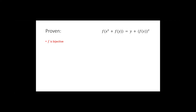So f is bijective. Now, on the left-hand side we have an x squared, but squares don't care about signs. So maybe if we plug in minus x for x, this x squared will be the same, and we can deduce something from that.